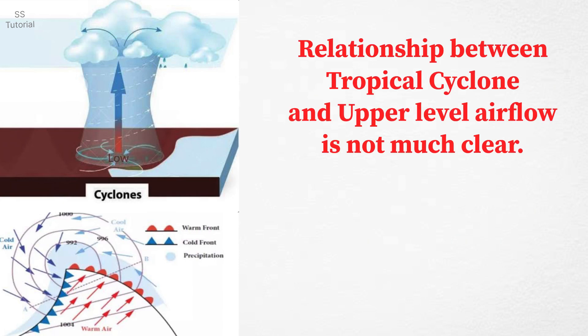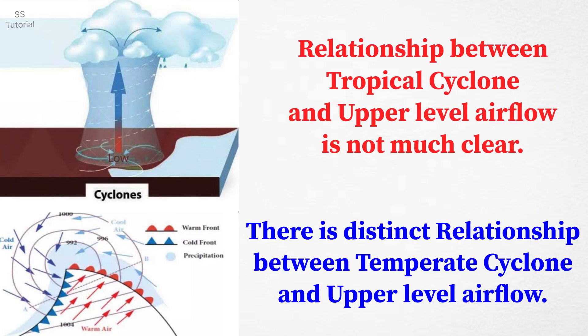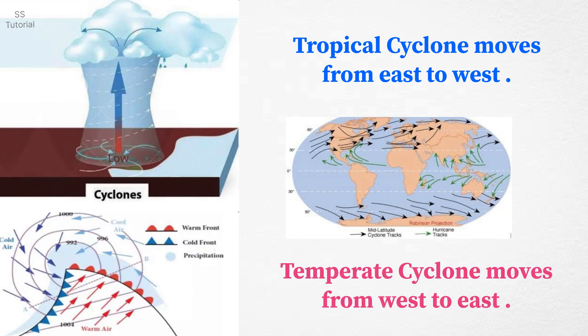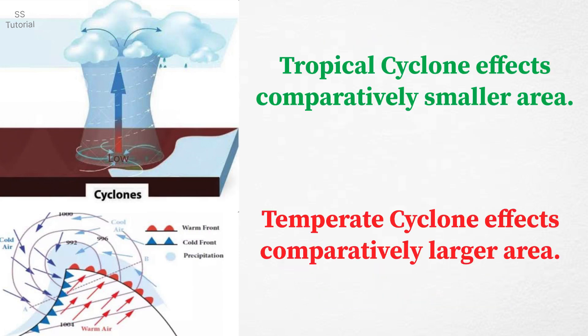Usually the relationship between tropical cyclones and upper level air circulation is not much clearer. Whereas there is a distinct relationship between temperate cyclones and upper level air circulation. Usually tropical cyclones move from east to west, whereas temperate cyclones usually move from west to east.